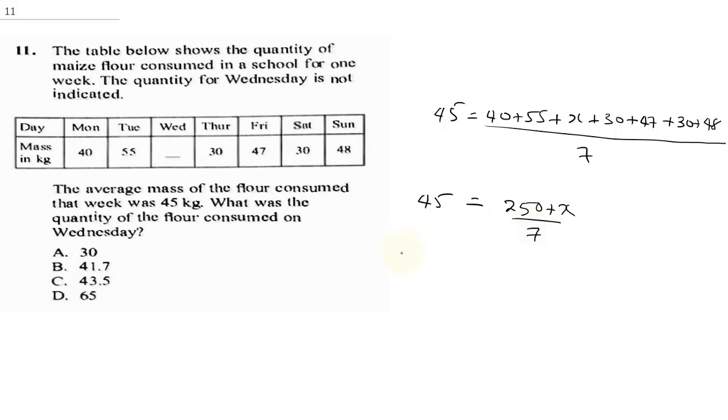At this point, we will cross-multiply. This would be 45 times 7 is equal to 250 plus x. 45 multiplied by 7 is going to give us 315, is equal to 250 plus x.